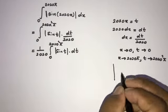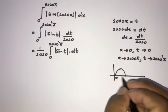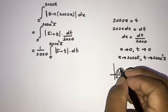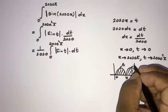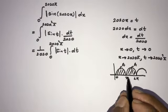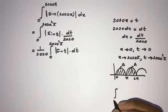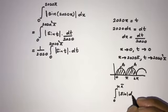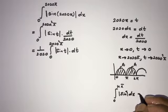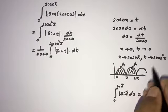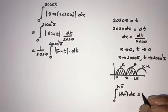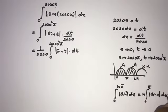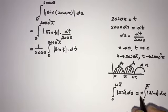Now, if you look at the graph of the absolute value of sine of x, we know it repeats with period π. Each arch has area equal to a. So the integral from 0 to n times π of the absolute value of sine of x dx equals n times the integral from 0 to π of the absolute value of sine of x dx.